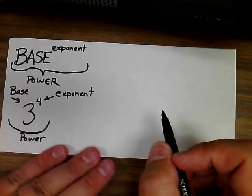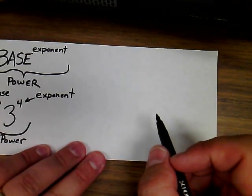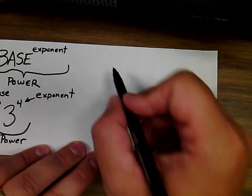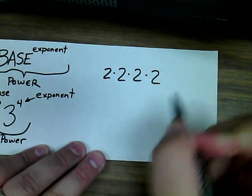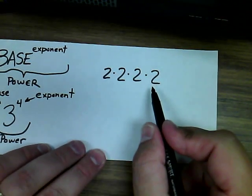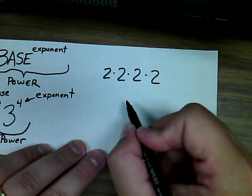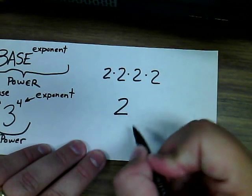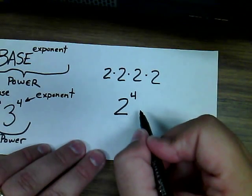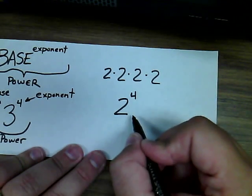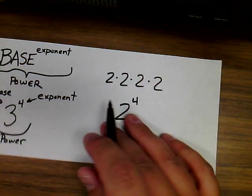Exponential notation is used for writing factors that are the same. For example, when multiplying 2 times 2 times 2 times 2, since the same factor is being multiplied again over and over, you can write that with 2 as your base, because that's the number that's repeated, and your power, or your exponent, representing the number of times that base is multiplied by itself.